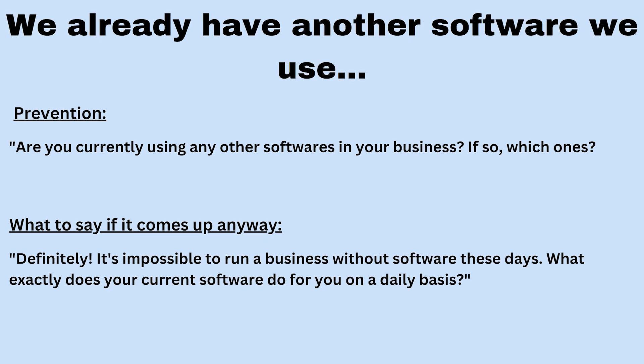Our ninth objection is: we already have another software that we use. This can be prevented at the beginning by asking: are you currently using any other softwares in your business? If so, which ones? You need to study up on other CRM or automation softwares so you know what they do and don't do, and can show where GoHighLevel adds value. If it's a platform you don't know, ask: what does it do for you on a day-to-day basis? What do you like most about it? Then you can say: based on what you've told me, our software can still be a value to you — here's what it does that your current one isn't doing. If it comes up at the end anyway, ask the same question: what exactly does your current software do for you on a daily basis?